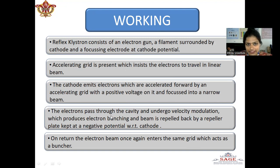The electrons pass through the cavity and undergo velocity modulation which produces electron bunching and the beam is repelled back by a repeller plate kept at negative potential with respect to cathode. On return, the electron beam once again enters the same grid which acts as a buncher and this re-entering going from electron gun or the cathode to the repeller and coming back to the cavity is known as the transit time.